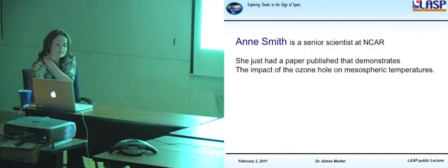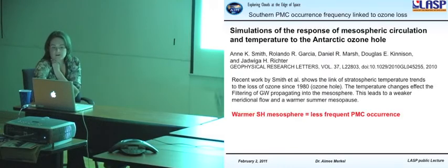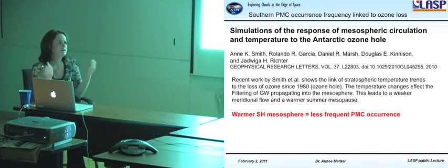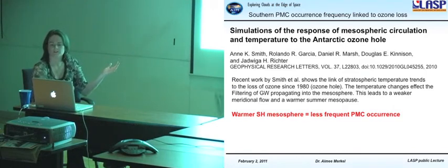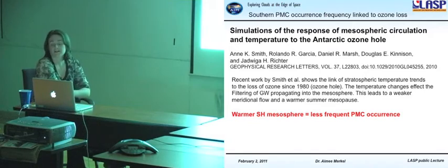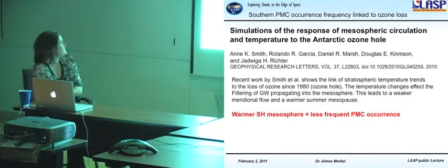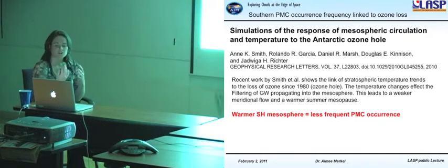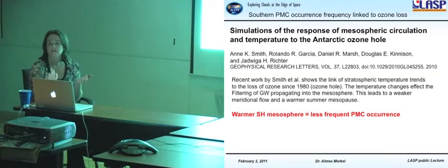Anne Smith is a senior scientist at NCAR. She just published a very interesting paper that demonstrates the impact of the ozone hole on mesospheric temperatures, which then have a direct effect on PMCs. So she's linking the ozone hole to the PMC occurrence in the southern hemisphere. There's always been way more clouds that occur in the northern hemisphere than the southern hemisphere. And she's showing that one of the possible reasons is due to the loss of ozone since 1980. So the ozone hole is causing temperature changes in the mesosphere due to the gravity wave filtering that propagate up to the mesosphere. So this leads to a weaker meridional flow and a warmer summer mesopause. Warmer summer mesopause, less frequent PMC occurrence. So she's showing that because of the ozone hole, we have way less clouds in the southern hemisphere than we actually should probably if the ozone hole wasn't there.